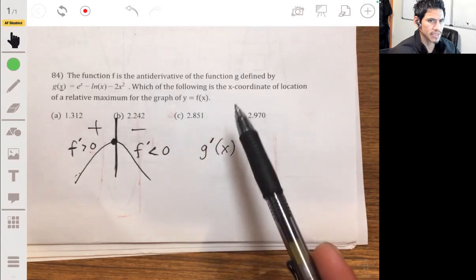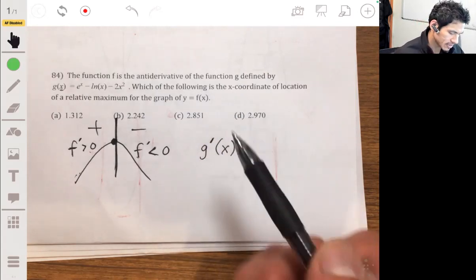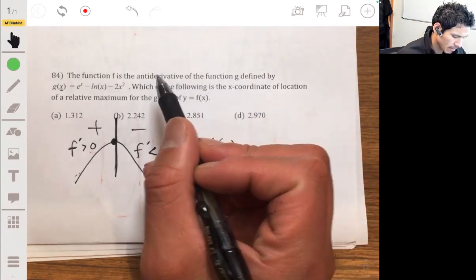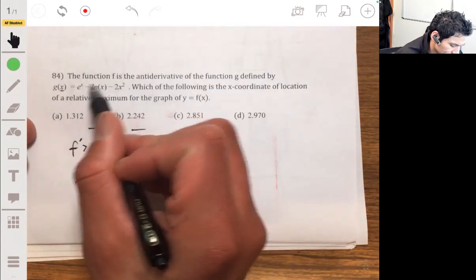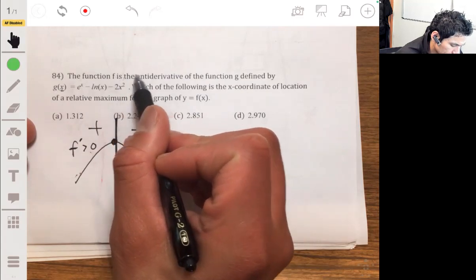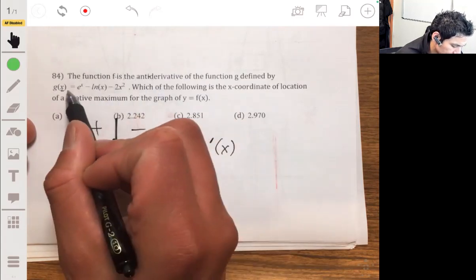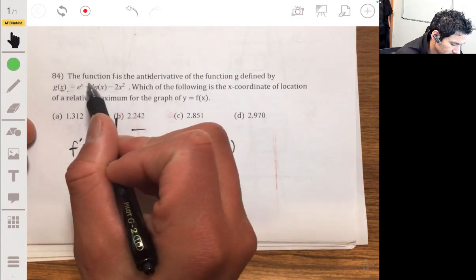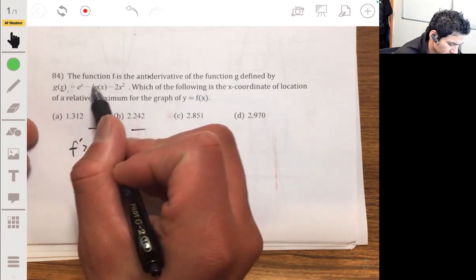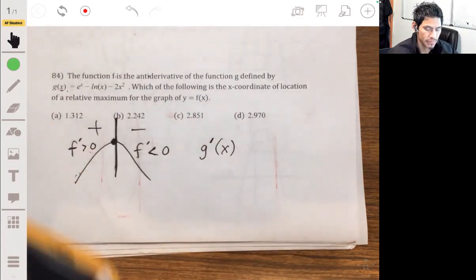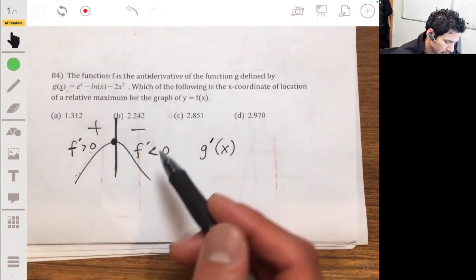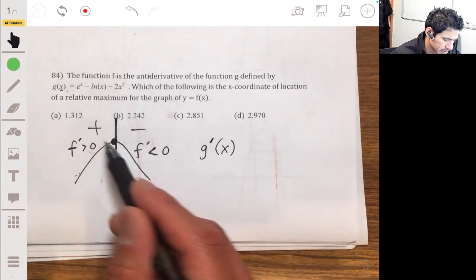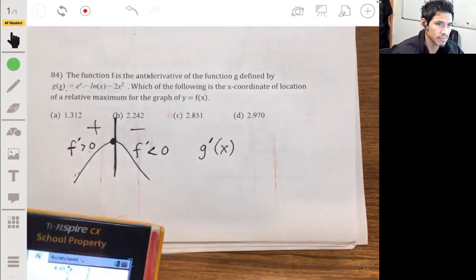Actually, I just realized this is easier than what I just said. So this is the antiderivative, so f is the antiderivative. So that means g is the derivative. So we just have to look at this graph. We don't even have to worry about finding the derivative of it. So let me just use my calculator and just show you. Sorry about that, the concept is still the same. We want to look where this changes from positive to negative.